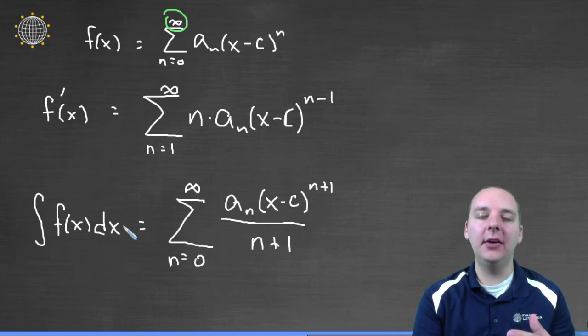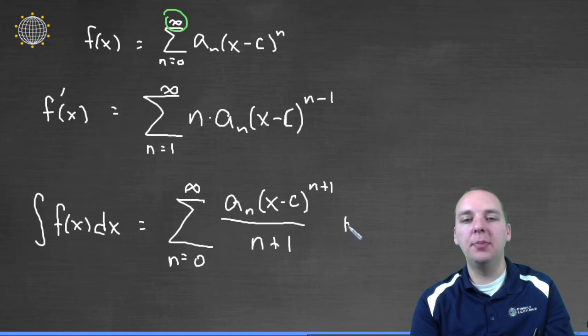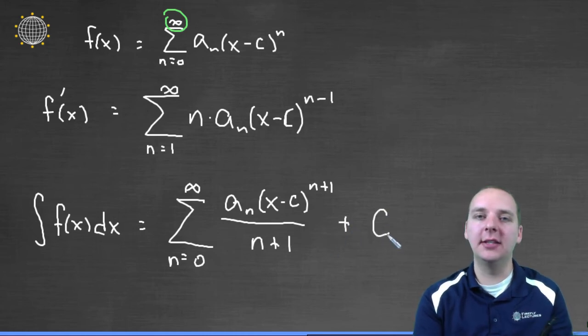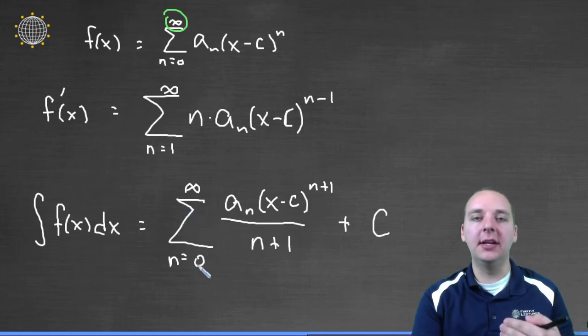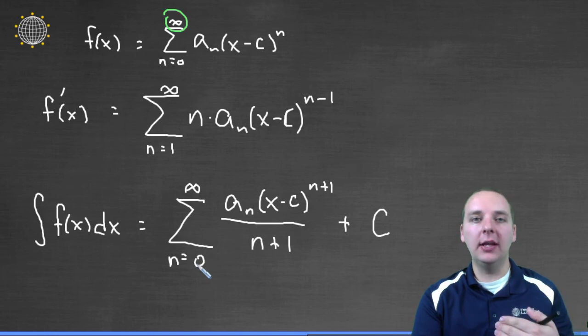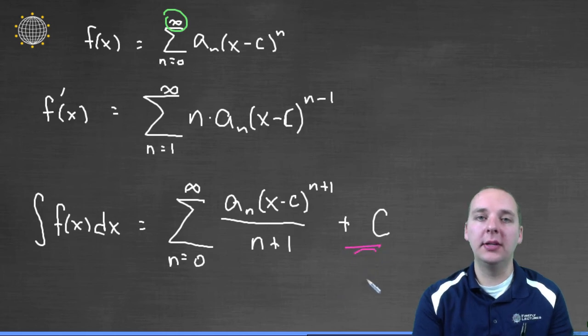Where is that extra term coming from? Well, you remember from earlier in your calc one class, when you do an indefinite integral, what are you always supposed to put at the end? You're supposed to put a plus c, that constant of integration. That's where the extra term comes in. So rather than backing up your series to get an additional term and starting it at negative one, instead you just leave it at zero and you tack on your extra term with the plus c here.